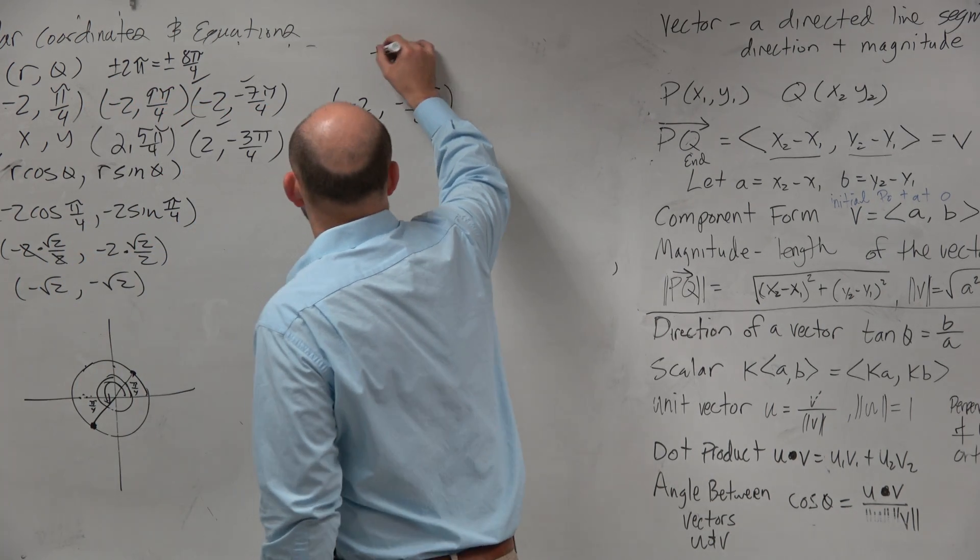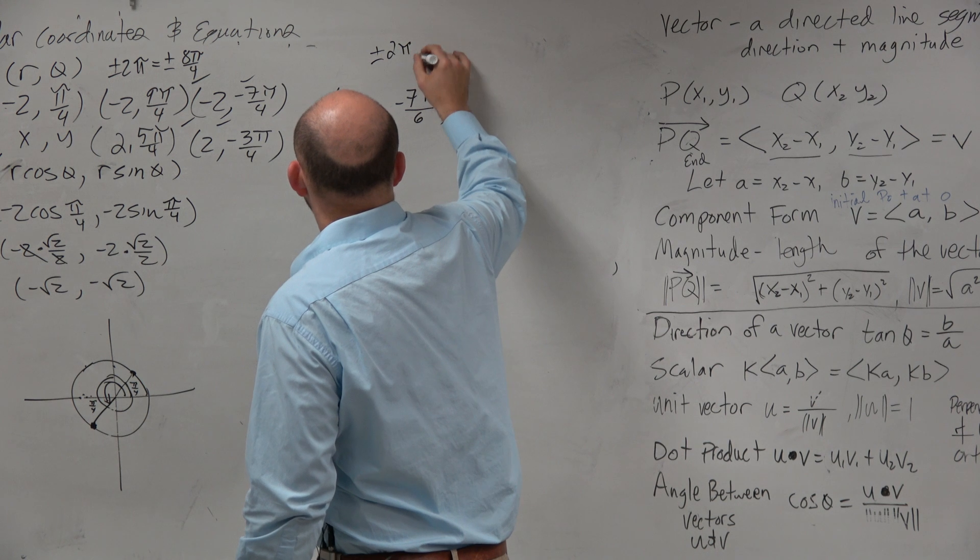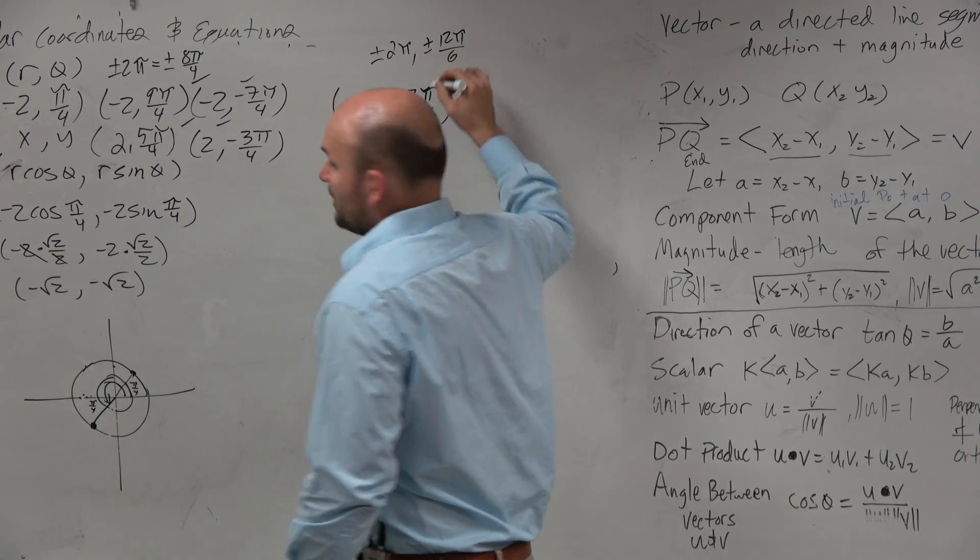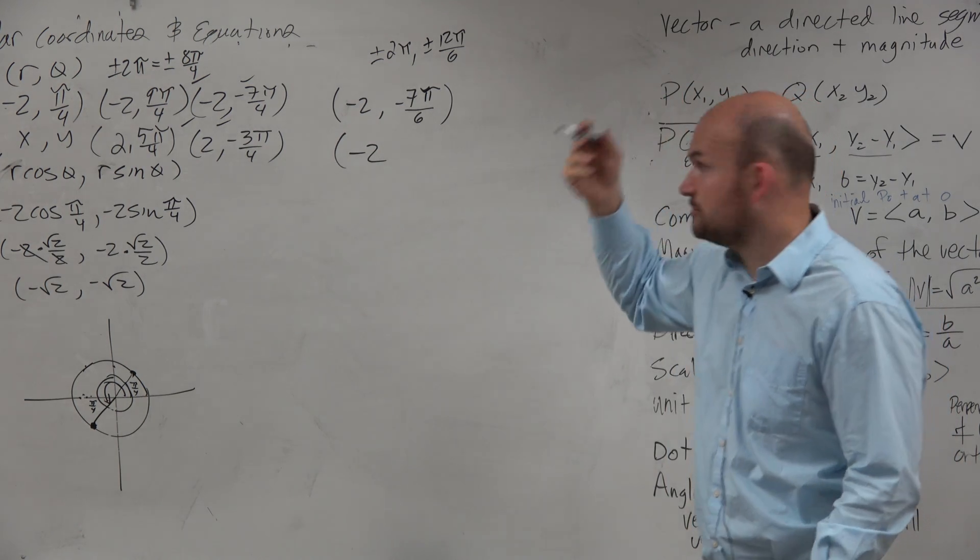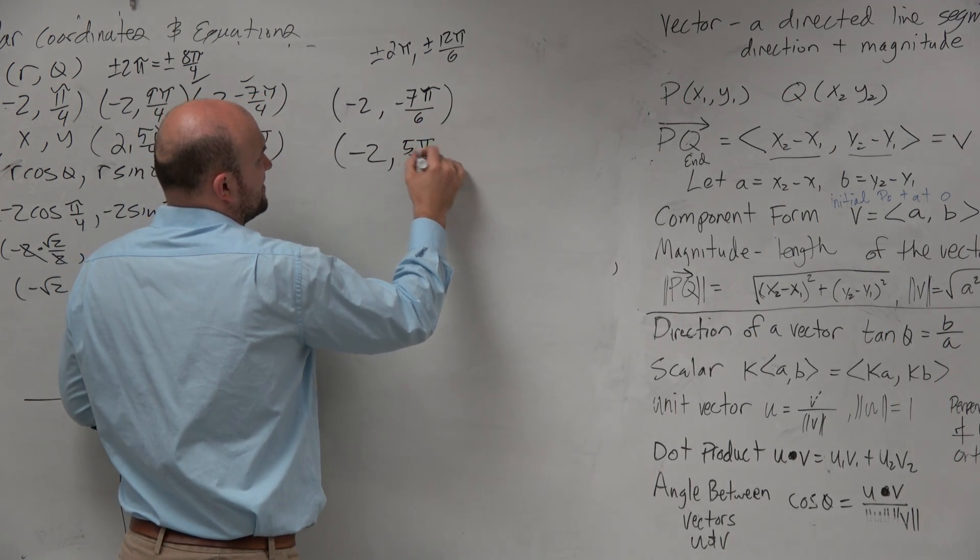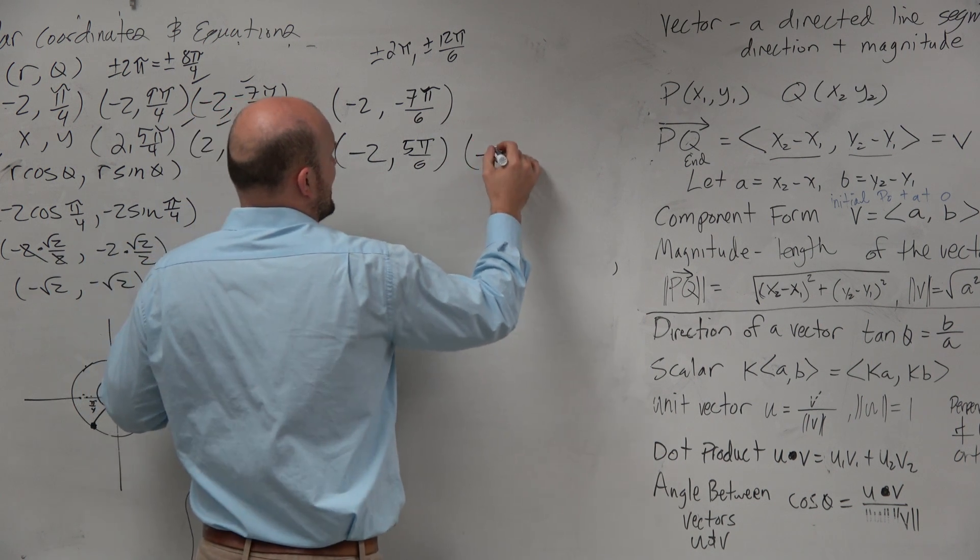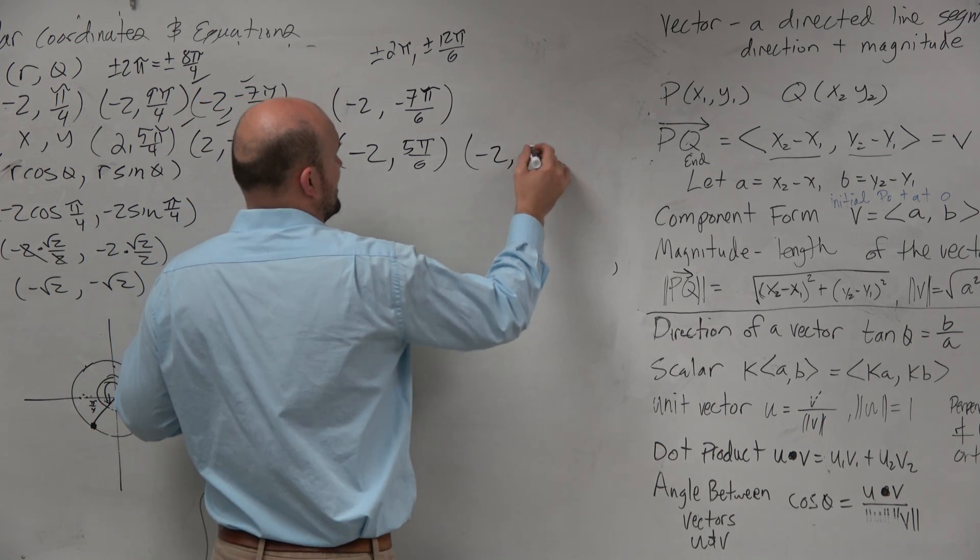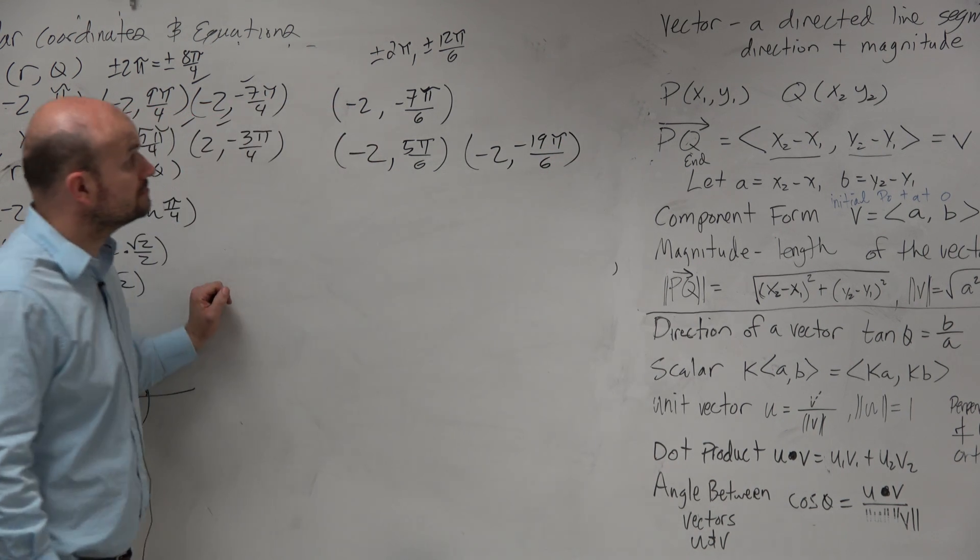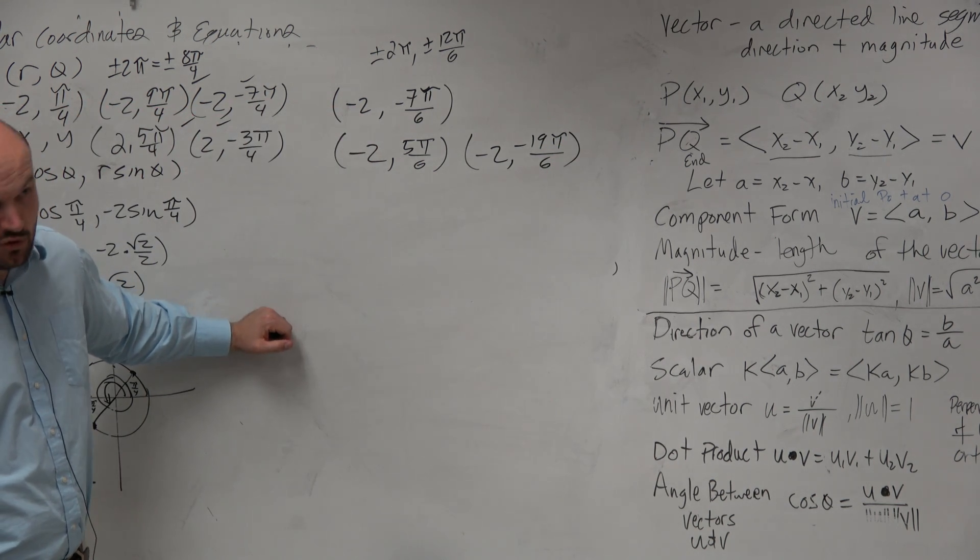So if I'm just adding or subtracting 2π in terms of 6, that's really adding and subtracting 12π over 6, right? So I'm just going to do this in my head real quick. If I added 12π over 6, I'd be left with 5π over 6. If I subtracted 12π over 6, I'd be left with negative 19π over 6. Quick, easy.